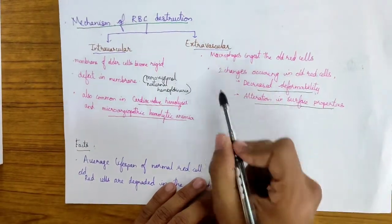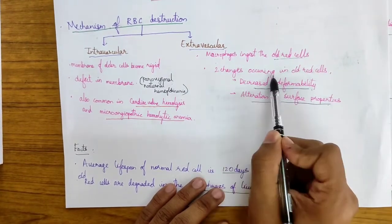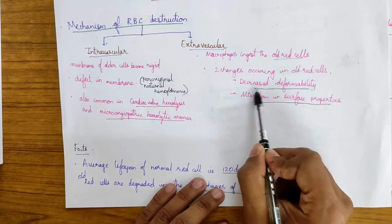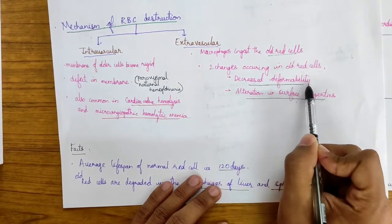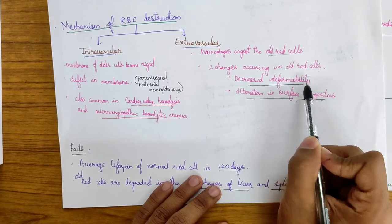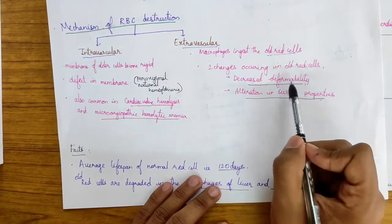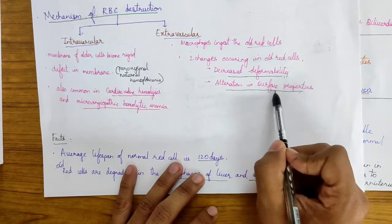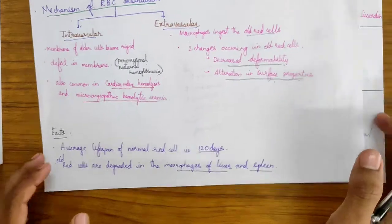Talking about the extravascular causes, macrophages ingest the older red cells. Two changes occur in old red cells: decreased deformability and alteration in surface properties. Deformability is the ability of the RBC to change its shape according to the size of the vessels. The surface properties are influenced by the immunoglobulins present in the blood.